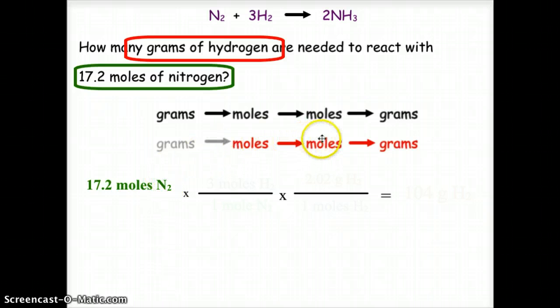Whenever we go from moles to moles, we always use the mole ratio from the balanced chemical equation. So in this case, we are comparing three moles of hydrogen to one mole of nitrogen. So we have a three mole over one mole ratio.